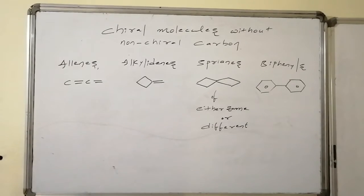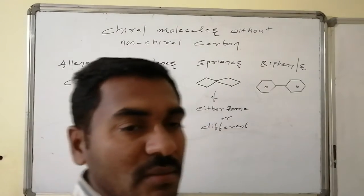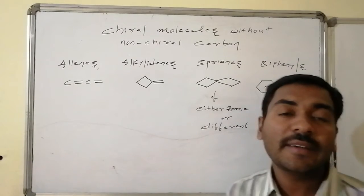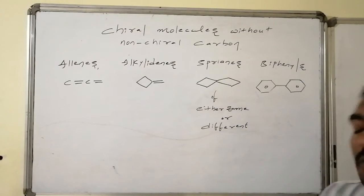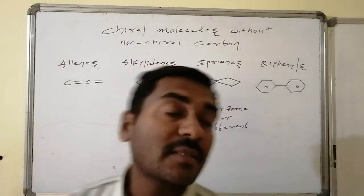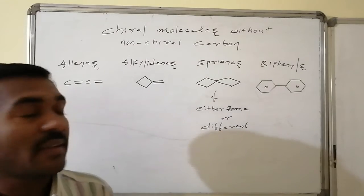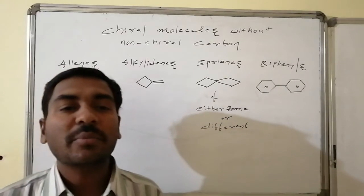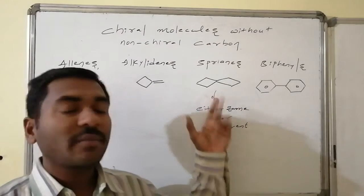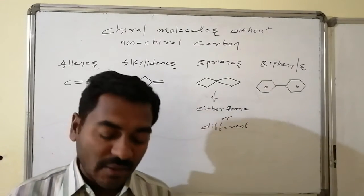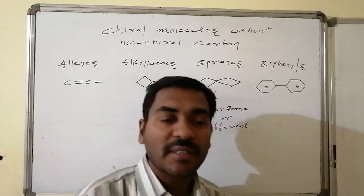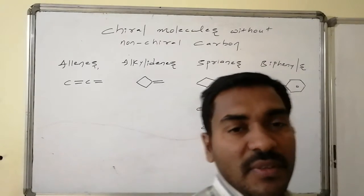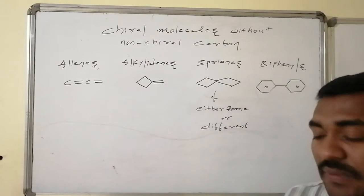The examples of such compounds are allenes, alkylidenes, spiro compounds — that is spiranes — followed by the biphenyl compounds. Spiranes can be formed by either same-sized rings or different-sized rings. Let us go for the allene.